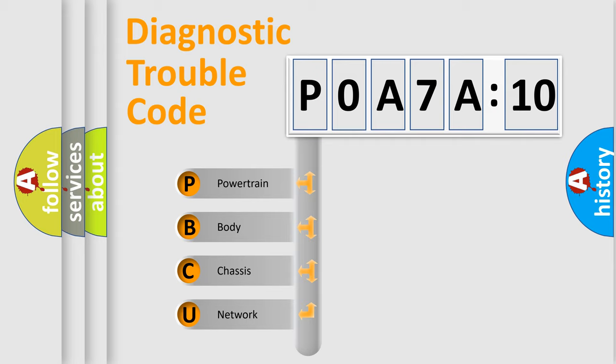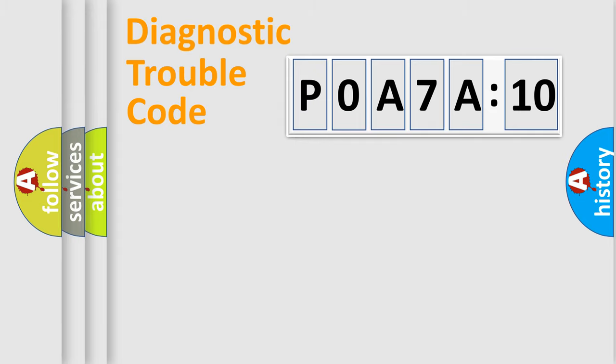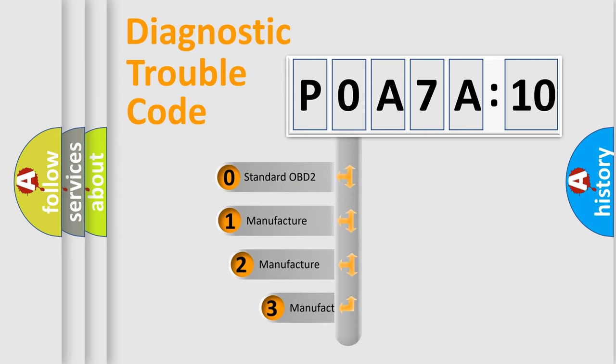We divide the electric system of automobile into four basic units: Powertrain, Body, Chassis, and Network. This distribution is defined in the first character code.